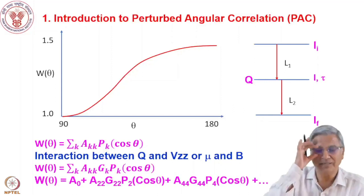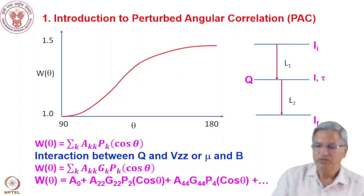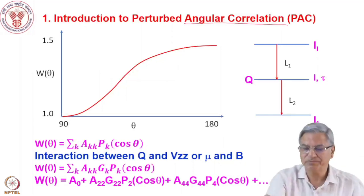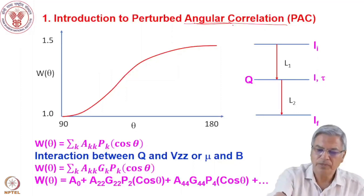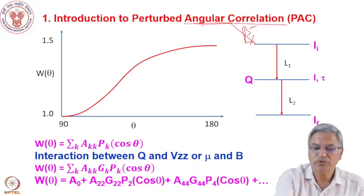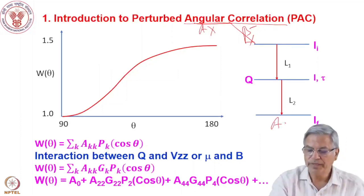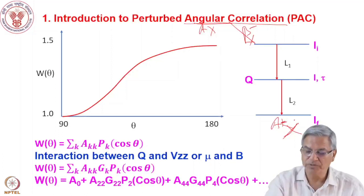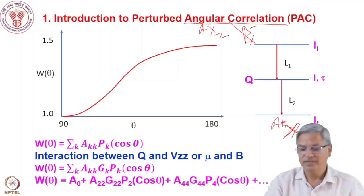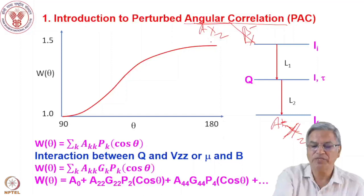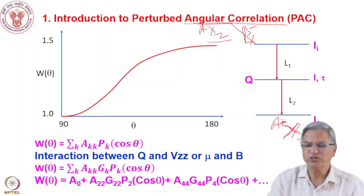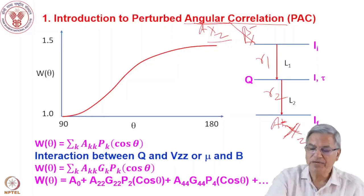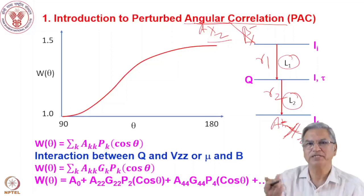Let me introduce the technique of perturbed angular correlation. Angular correlation is between two gamma rays. Suppose you have an isotope undergoing beta minus or beta plus decay: A(Z)X goes to A(Z+1)Y by beta minus decay. This particular decay scheme is for a beta-minus-emitting radioisotope, and if it has a cascade of gamma rays — gamma 1 and gamma 2 — the gamma rays will have their own multipolarities like magnetic dipole, electric quadrupole, and so on.